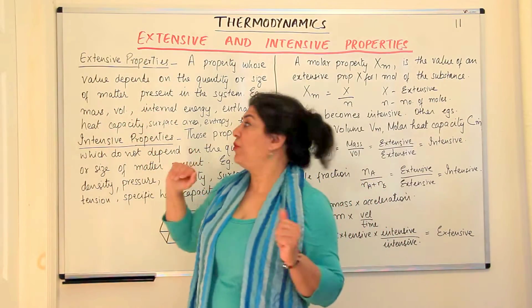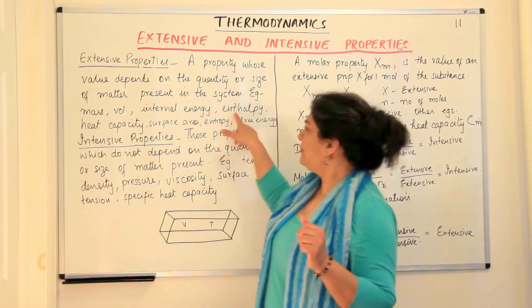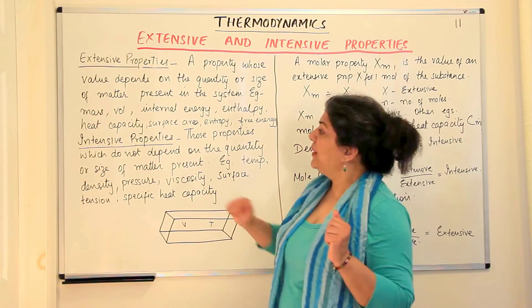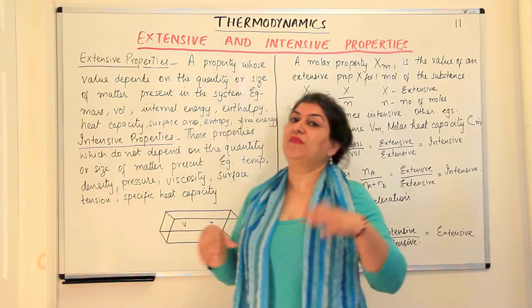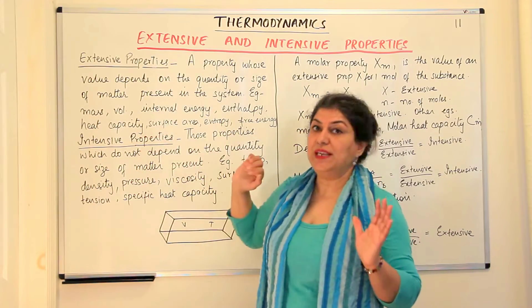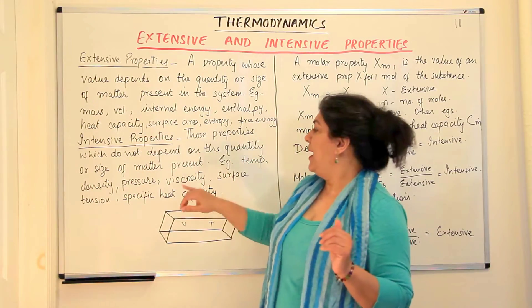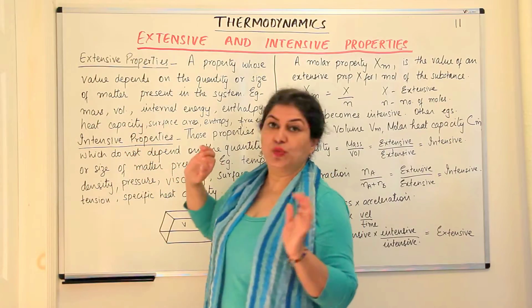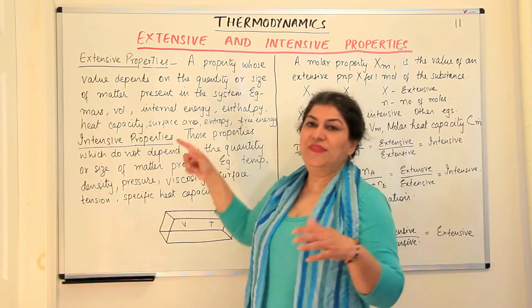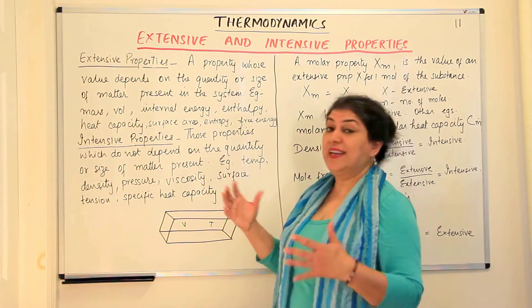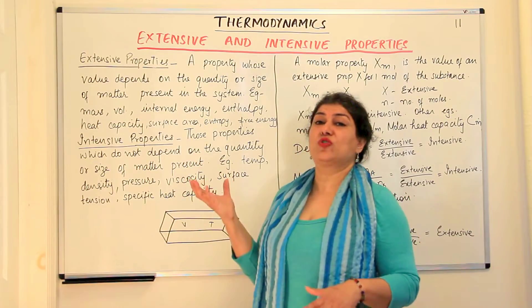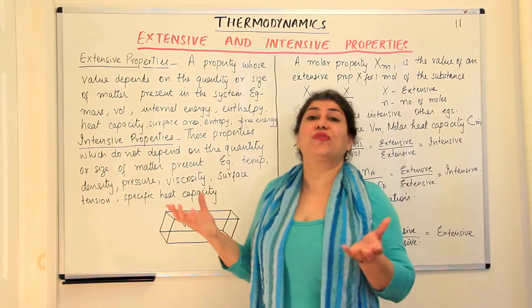Let us understand the other properties now. Enthalpy, we know, is the heat content. Heat capacity is the topic we are going to do next — the next video will be on heat capacity and molar heat capacity. Surface area you already know. Entropy, I told you, is the degree or measure of chaos, which we will also cover in a later video.